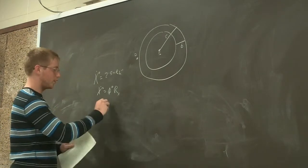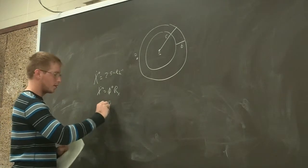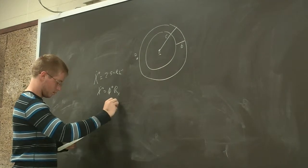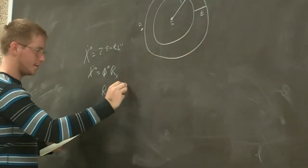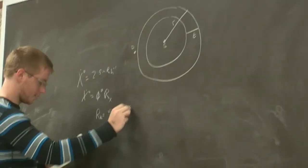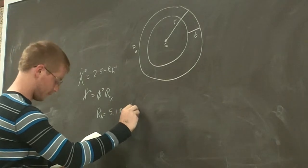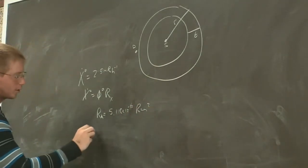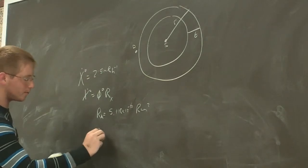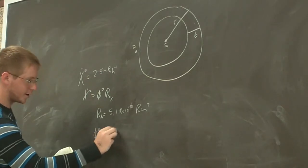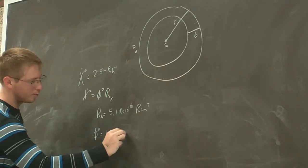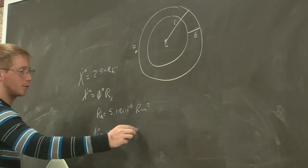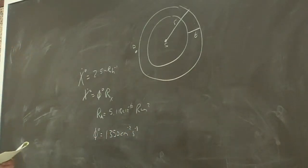So shield utility says that Rx is 5.118 times 10 to the negative 8, no, 10 to the 8, R per centimeter squared. So that means our flux has to be less than 13.50 per centimeter squared per second. And I'm just going to say equals because that's what we're going to solve for.